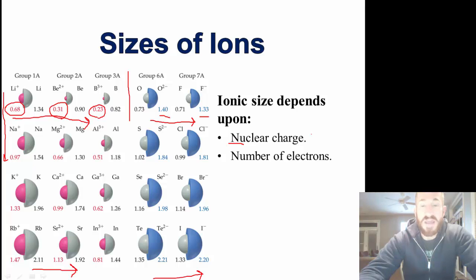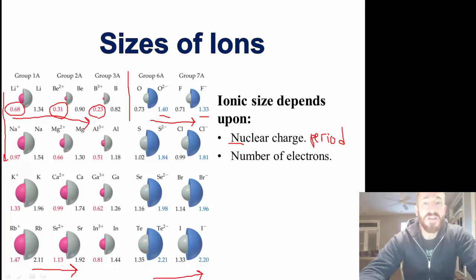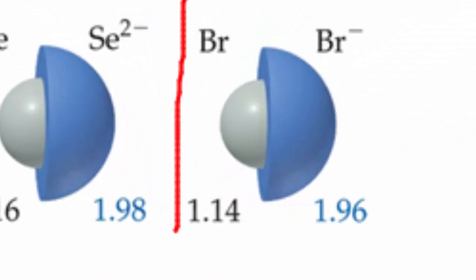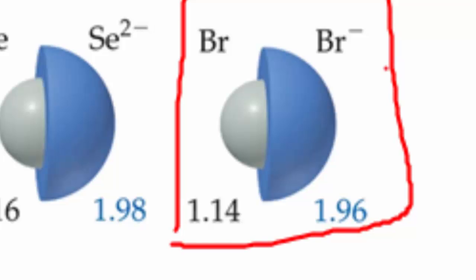The next factor is number of electrons, and this has to do with anions. Anions are negative. If we look at the bromide ion, there are more electrons in bromide than in the bromine atom. With more electrons, there is increased repulsion. So the bromide ion with one more electron is bigger than the bromine atom. The one with a greater number of electrons is always the larger one.